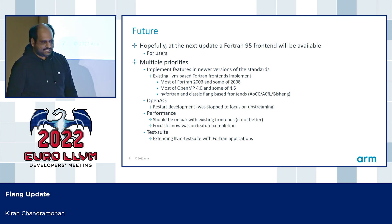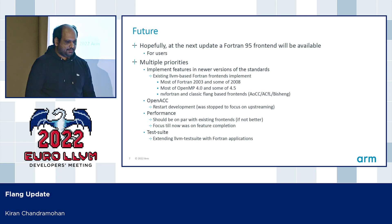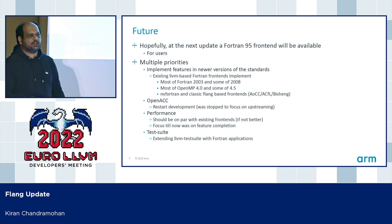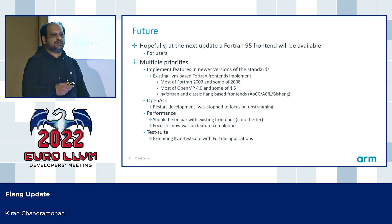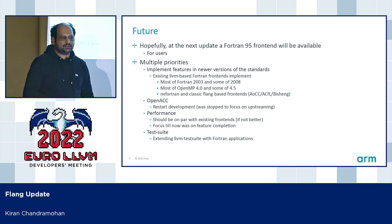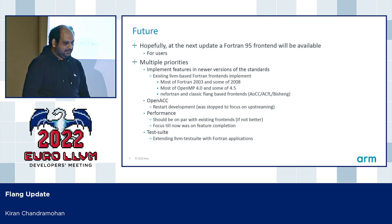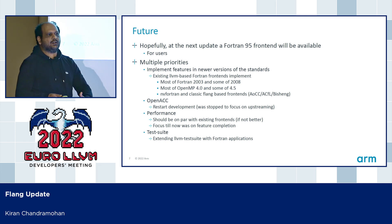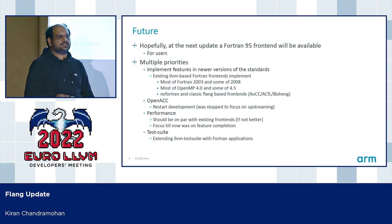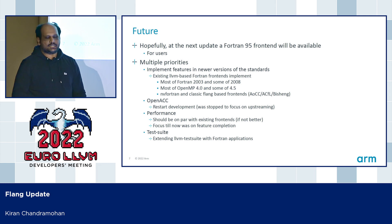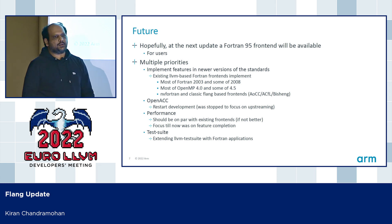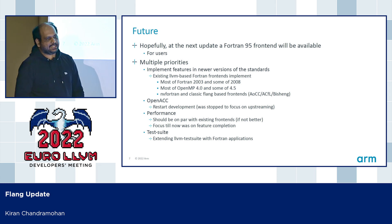In future — hopefully at the next update — we will have a fully functional Fortran 95 front-end available. Going forward, there are multiple priorities: supporting newer versions of the standard like Fortran 2003 and Fortran 2008, which is important because the existing front-end supports all of these. We will also work on OpenACC and OpenMP. Performance is also a priority — until now the focus has been on supporting the standards, but we will also start to work on some transformation and optimization passes. We also hope to strengthen the LLVM test suites with various Fortran applications so the compiler can be tested and maintained. Thank you.